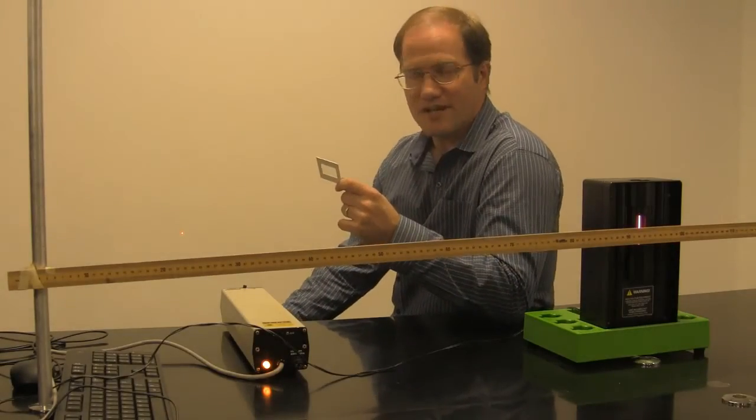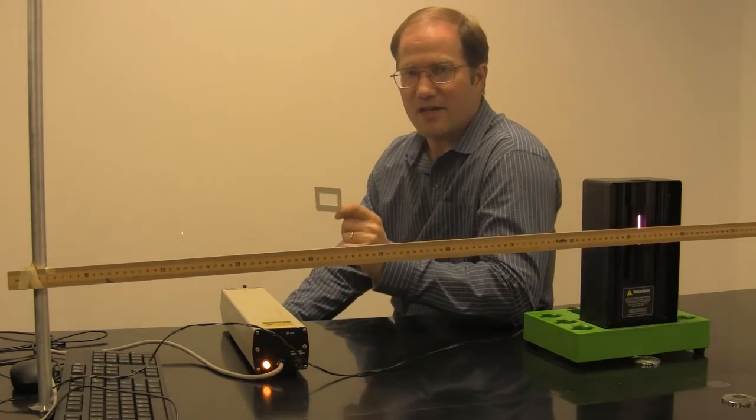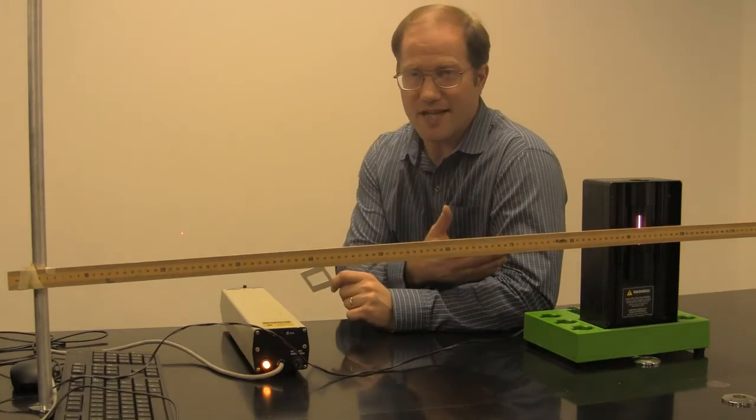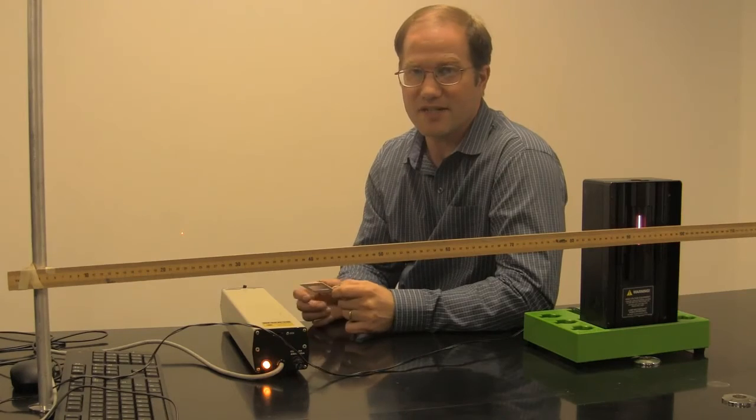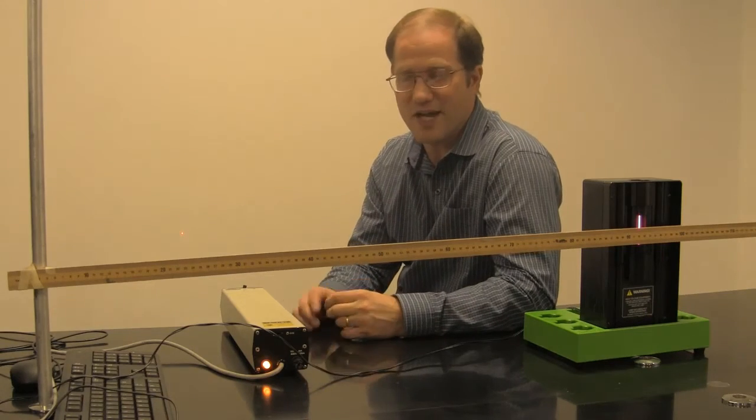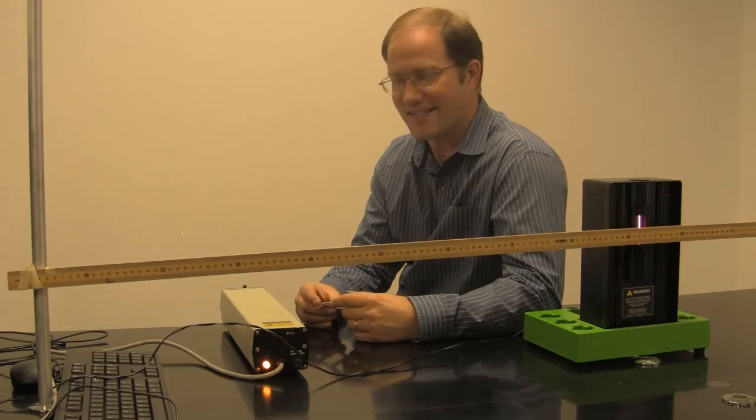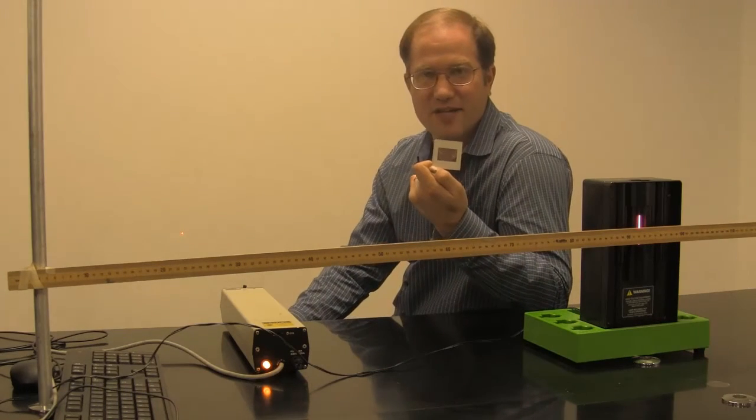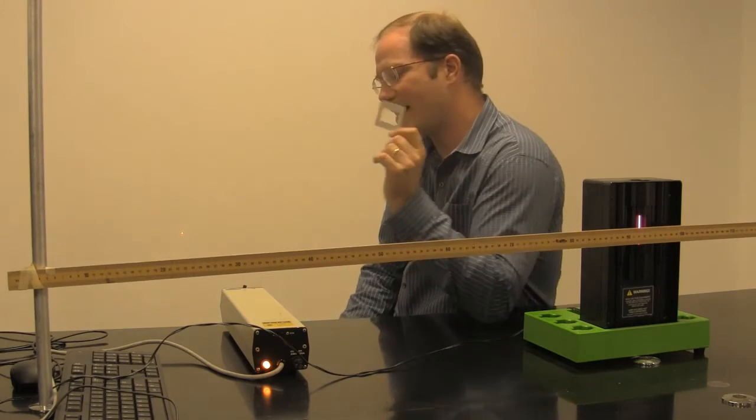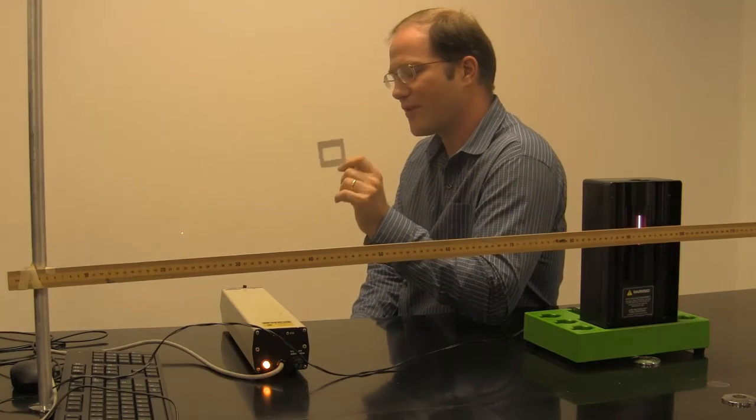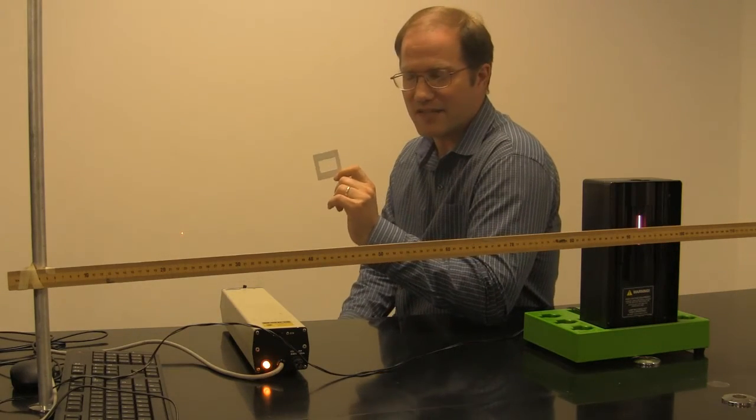With a diffraction grating, I can split up the colors coming from my unknown element. Well, I know it's hydrogen, but it could be unknown. It may be a totally new element with its own unique levels and colors of light. But, I don't know what the diffraction grating spacing is. The way I find that out is to put it in front of a known wavelength of light.